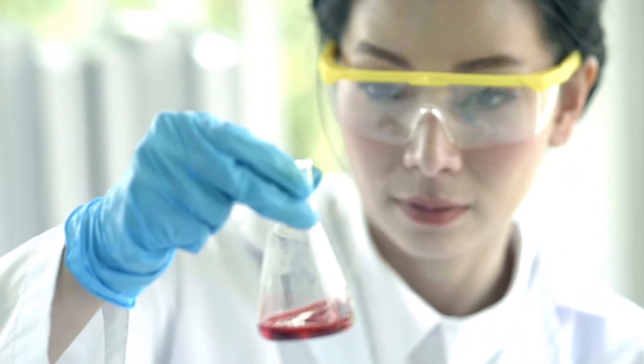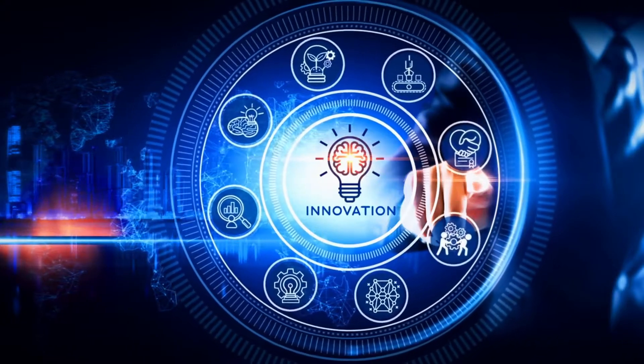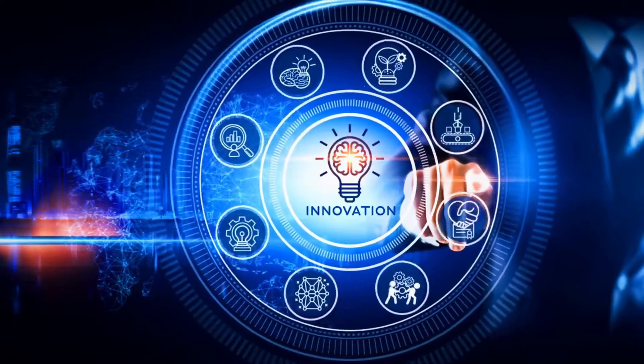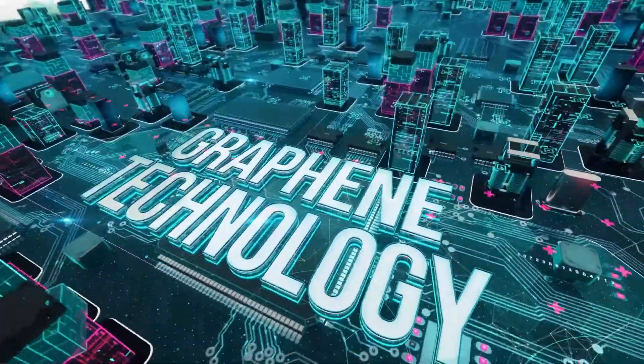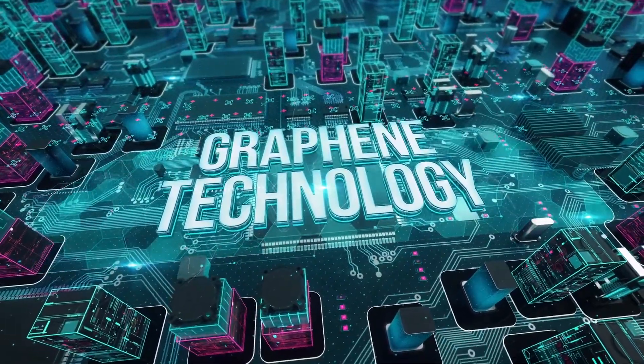You don't make things out of graphene, you make things better with graphene. Graphene offers an unrivaled combination of strength, electrical and thermal properties, and when properly married up with other materials, can impart these properties to plastics, metals, concretes, electronics, lubricants, and many other mediums.